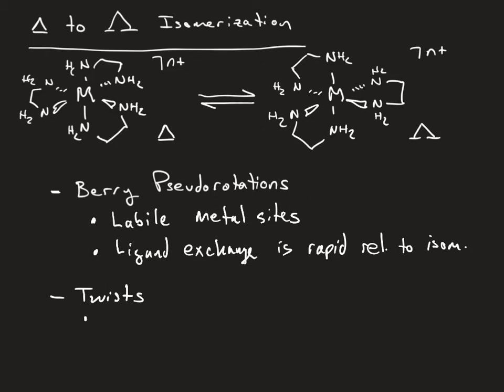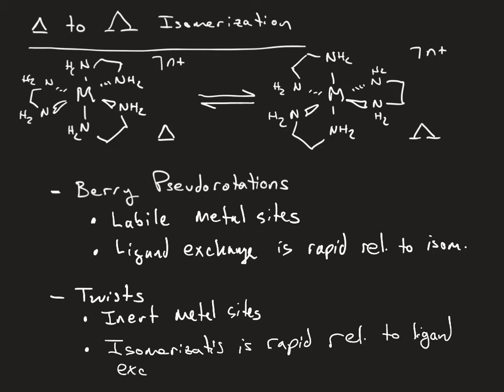In the case of twists, these are for kinetically inert metal sites, and in these cases, what's found is that isomerization is rapid relative to ligand exchange. We'll be talking about kinetically inert versus kinetically labile metal sites in the next video, but in these cases, the thing that's important is that with Berry pseudorotations, you have rapid ligand exchange relative to the isomerization. In the twist, the isomerization is rapid relative to the ligand exchange, with the key word being relative.